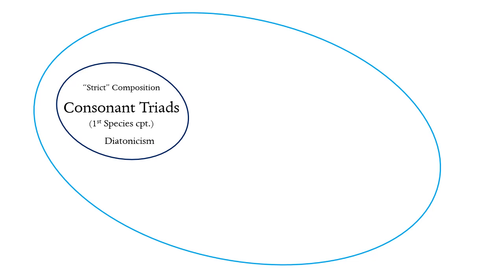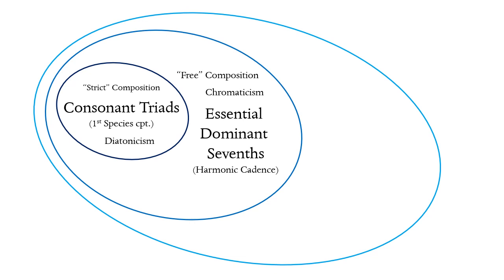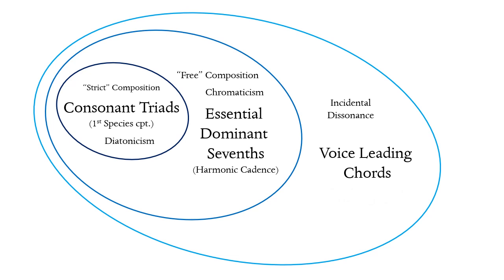Everything outside of this bubble is free composition, and here is where we encounter freer use of chromaticism to change key through modulations, and for expressive purposes. The next bubble is the one containing the essential dominant 7th chords. These chords are only relatively self-sufficient — we can explain how they are used by showing how they resolve to the consonant triads in a way that conforms to the harmonic cadence as we've discussed in this video. The last and largest category are voice leading chords. These chords are not self-sufficient at all; it doesn't even make sense to think of composing an entire piece using only voice leading chords. They gain their meaning based on the context provided by consonant triads and dominant 7ths. These chords often form incidental dissonances, and their voice leading is explained through the study of combined species counterpoint and thoroughbass.